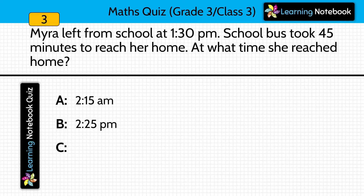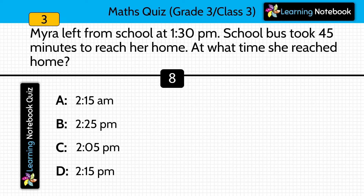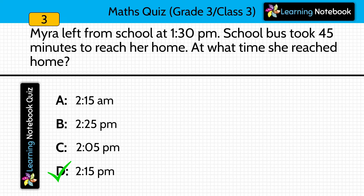Myra left from school at 1:30 pm. The school bus took 45 minutes to reach her home. At what time did she reach home? Answer is option D, 2:15 pm. Myra left school at 1:30 pm and the bus took 45 minutes, so 1:30 pm plus 45 minutes equals 2:15 pm.